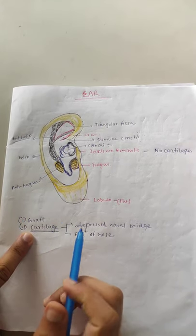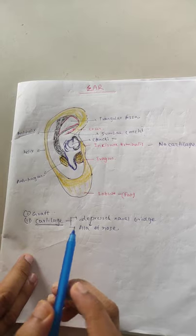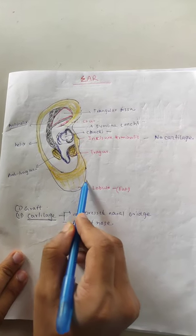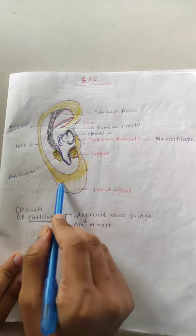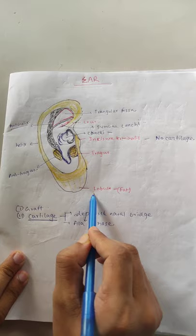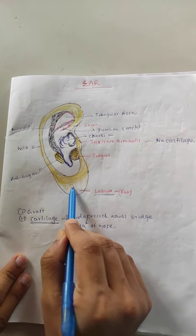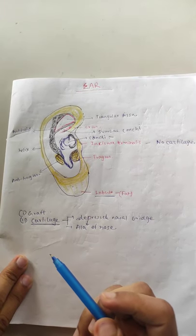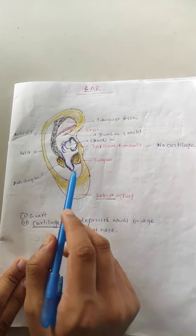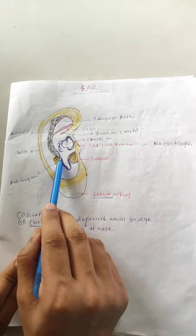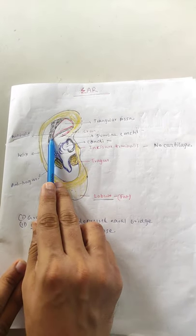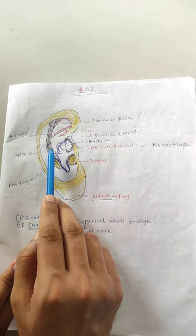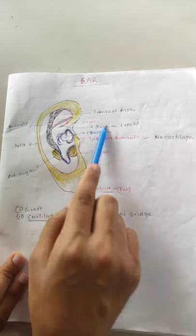Number three, the lobule supplies fat. Additionally, perichondrium from the Antitragus is another useful graft material. These are the main clinical importances of the external ear.